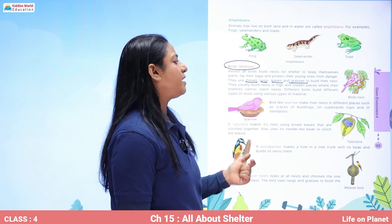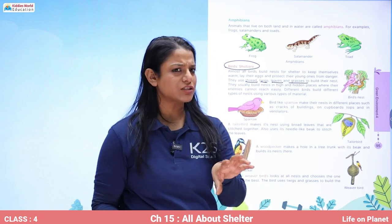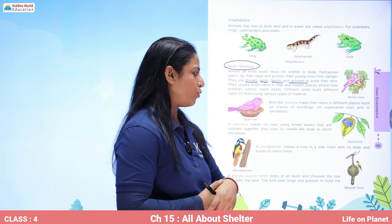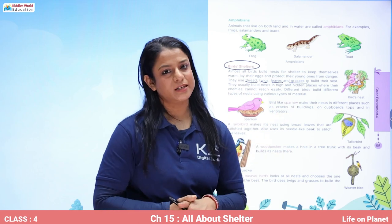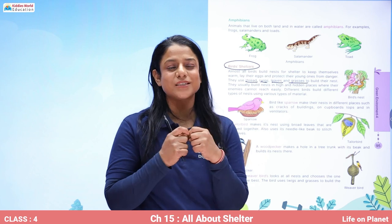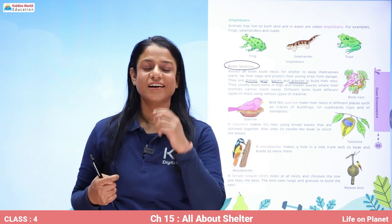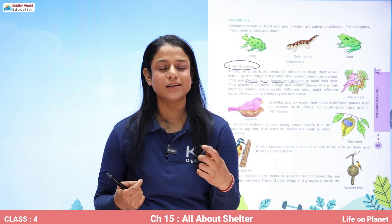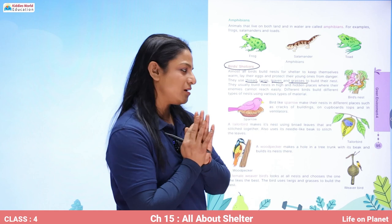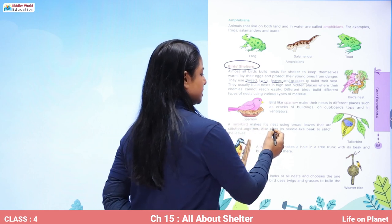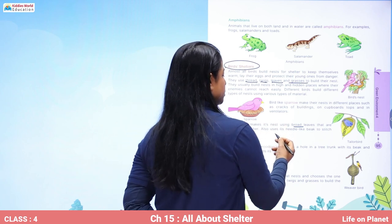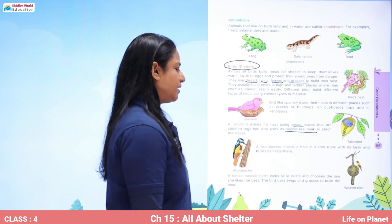Birds like sparrows make their nests in different places such as in the cracks of buildings, cupboard tops, and in ventilators. Even pigeons do that. A tailor bird actually sews its nest like a tailor — it uses its beak like a needle and sews broad leaves together to make a beautiful nest.